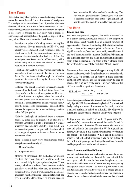Direction is the position of one point in space relative to another without reference to the distance between them. Direction is not in itself an angle, but it is often measured in terms of its angular distance from a reference direction. Distance is the spatial separation between two points, measured by the length of a line joining them. On a plane surface this is simple; however, on a sphere, the separation between points may be expressed as a variety of curves. The length of the line can be expressed in various units, for example, nautical miles (nm) or yards.